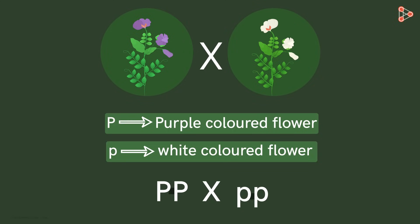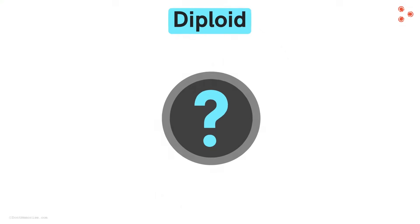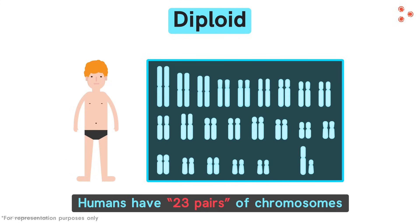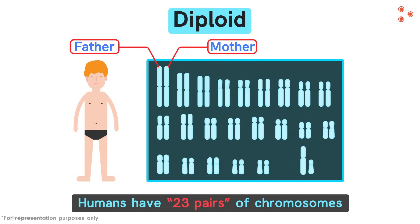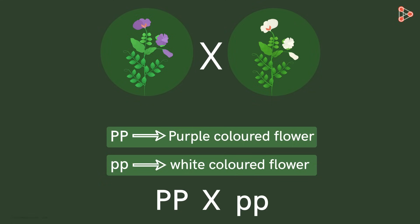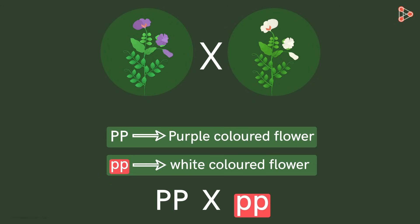Any idea why we have used the letter P twice here? It's simple — the green pea plant is a diploid plant. We have always come across the saying that humans have 23 pairs of chromosomes, because the chromosomes in us are always in pairs. Each set has one chromosome from each parent — this is the diploid nature. So when organisms have two sets of chromosomes, they are referred to as diploid organisms. Getting back to green peas, there are two sets of genes in it, which is why we use the letter twice to represent both allelic forms. So PP in upper case represents the purple colour of flowers, while PP in lower case represents the white colour of flowers.